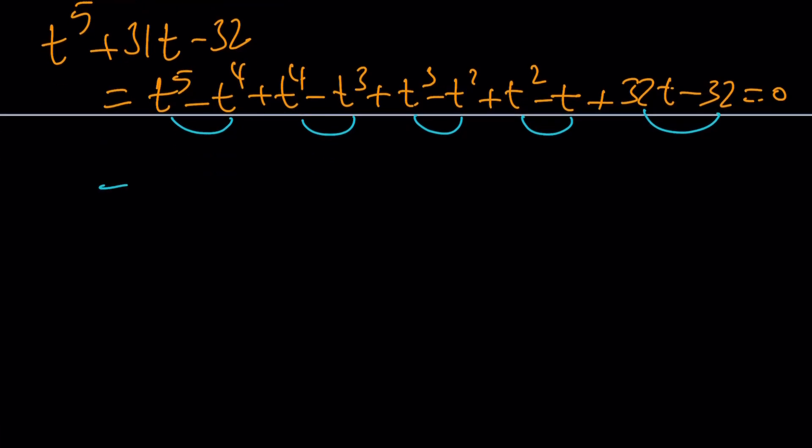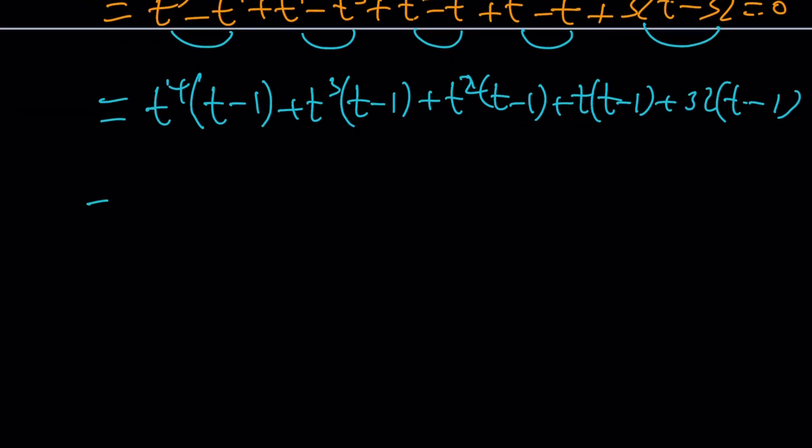Great. So, since we know T minus 1 is a factor, we were able to break it down like this. Obviously, this is very laborious, time-consuming, but it works. Anyways, let's just go ahead and take out common factors. This is T squared. This is T.